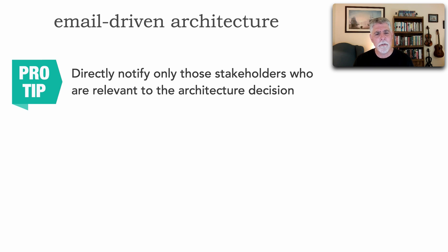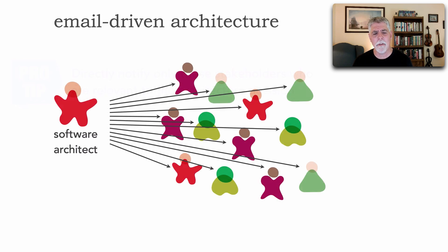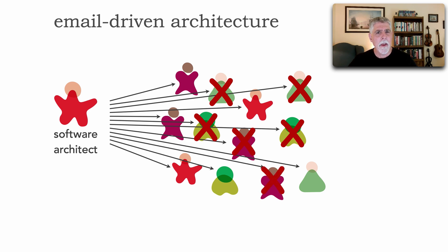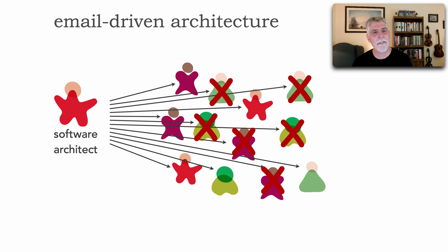The second tip is to directly notify only those stakeholders who are relevant to the architecture decision. Too many times architects broadcast decisions to the entire group, and people receive them who don't really care — it's not relevant to them. What happens is that those people start ignoring your email messages, especially if the subject starts with 'architecture decision,' until the relevant one comes to them. But since they're ignoring most of your emails, they never see it — yet another symptom and problem with email-driven architecture.